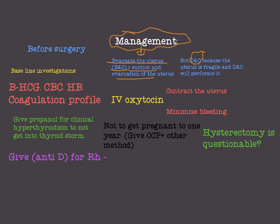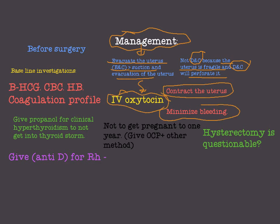Management involves evacuating the uterus by suction and evacuation. Take care not to do D&C because the uterus is very fragile in complete and partial molar pregnancy, and D&C is associated with an almost definite possibility of perforating the uterus. After evacuating the uterus, we give IV oxytocin to contract the uterus and minimize bleeding. Hysterectomy is still questionable in molar pregnancy as it is no more beneficial than suction and evacuation, and it will not prevent metastatic disease.